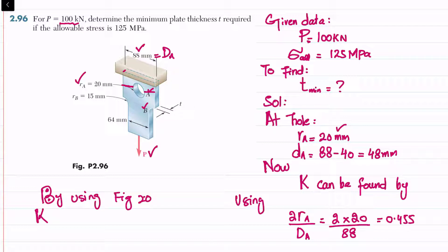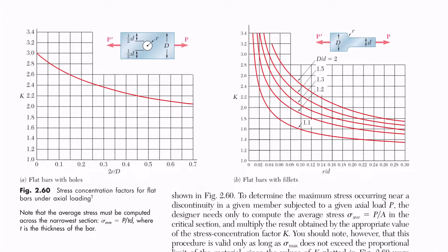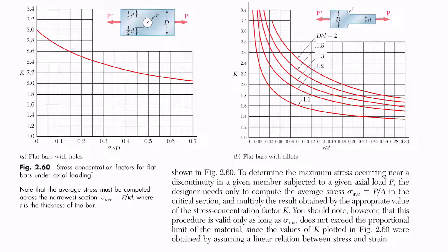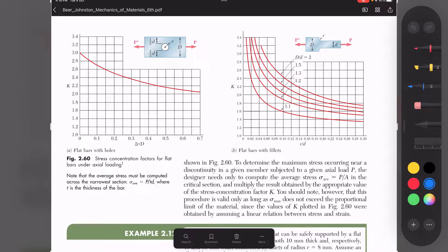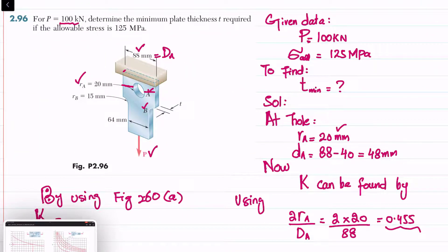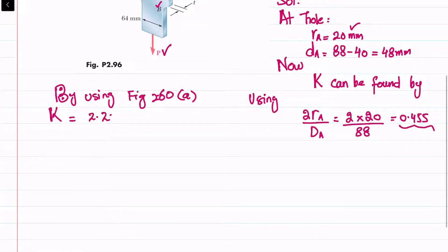From Figure 2.60a, with 2r/D = 0.45, you project the line and read k = 2.2. So k is equal to 2.20.